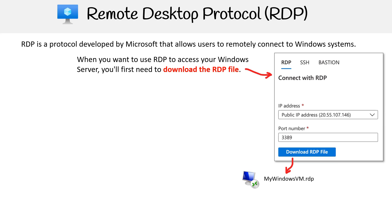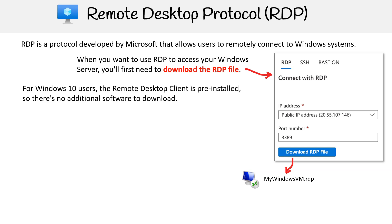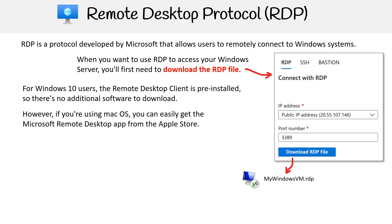When you want to use RDP to access your Windows server, you'll first need to download the RDP file. For Windows 10 users, the remote desktop client is pre-installed, so there's no additional software to download. However, if you're using macOS, you can easily get the Microsoft Remote Desktop app from the Apple Store.